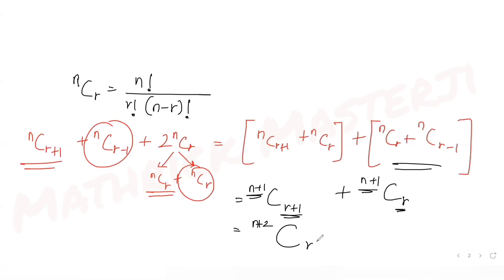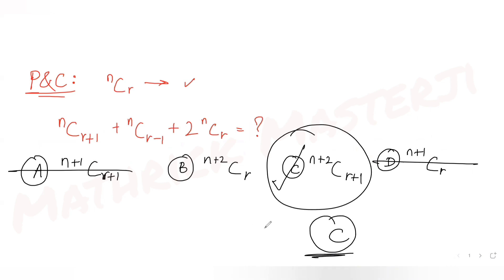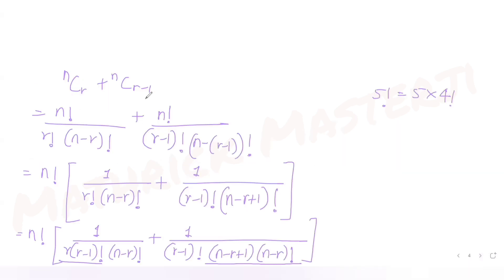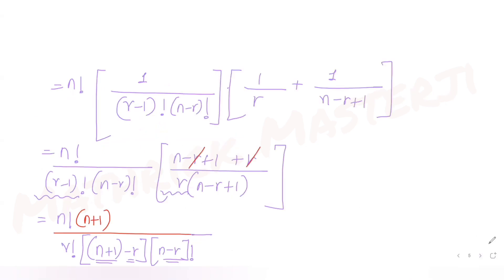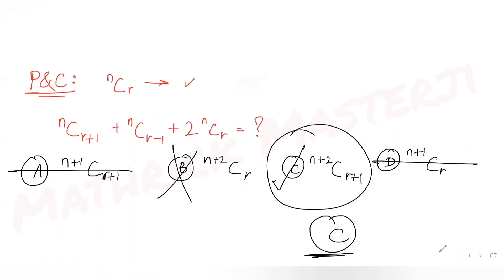Applying the rule one more time to n+1Cr+1 + n+1Cr, the power increases by 1 giving n+2Cr+1. That is the final answer. Checking the answer choices: n+2 in the power and r+1 in the base matches option C, so C is the correct answer. The key rule used throughout was nCr + nCr-1 = n+1Cr.